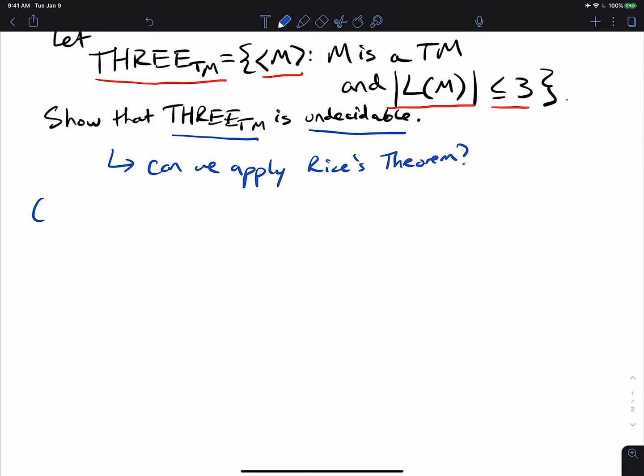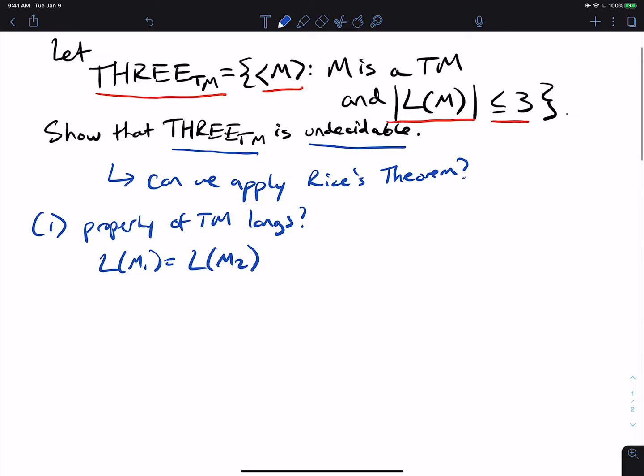Well, the two things we should always show is that it is indeed a property of Turing machine languages. So is it in this case? Well, if we have two Turing machines with the exact same language, can it be the case for 3TM that m1 is in 3TM and m2 is not in 3TM? Well, let's think about it.